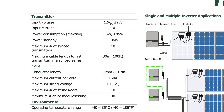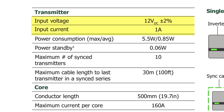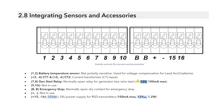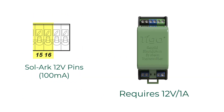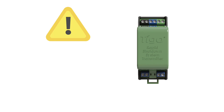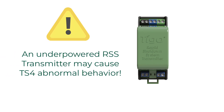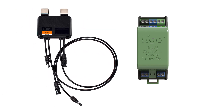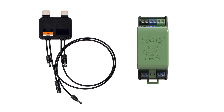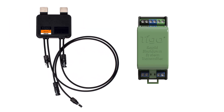The RSS transmitter data sheet states the power requirements as 12 volts and 1 amp. Therefore, the internal 12-volt pins of the Solark inverter are insufficient. If the RSS transmitter is underpowered, the TS4 may exhibit abnormal behavior and enter and exit rapid shutdown mode at random intervals. This behavior results in reduced array output and, eventually, TS4 failure.